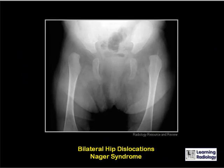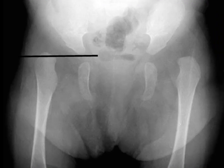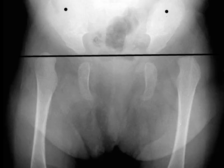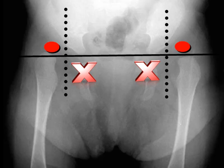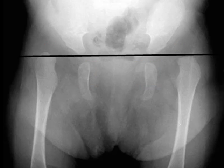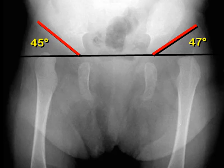This is a case with bilateral hip dislocations. Drawing the horizontal line and dropping the two perpendiculars from the outer edges of the acetabulae, we can clearly see that the capital femoral epiphyses would not lie within the lower inner quadrants — they appear in the upper outer quadrants, so both femoral heads are dislocated. Measuring the acetabular index, the angle is much greater than 20 degrees: 47 degrees on the left and 45 on the right.